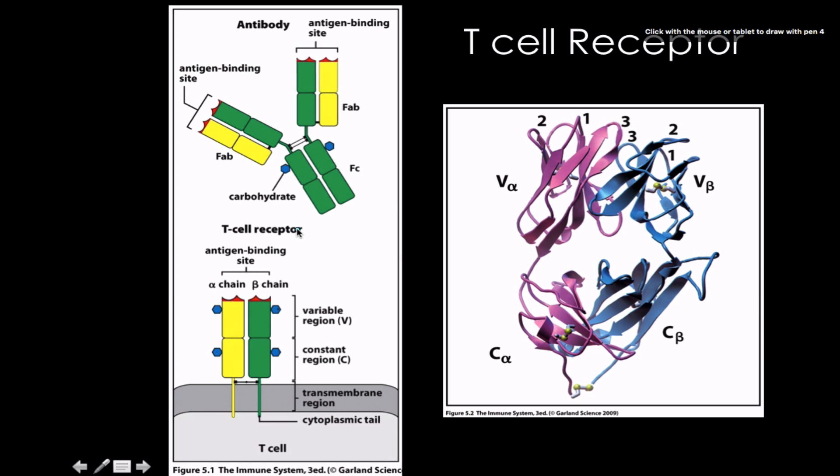We're moving into talking more about the other receptors of the adaptive immune response. Just like with the B cell receptors or antibodies, they have a lot of homology not only in their structures but also in their function. They have antigen binding sites, they both bind to antigens.